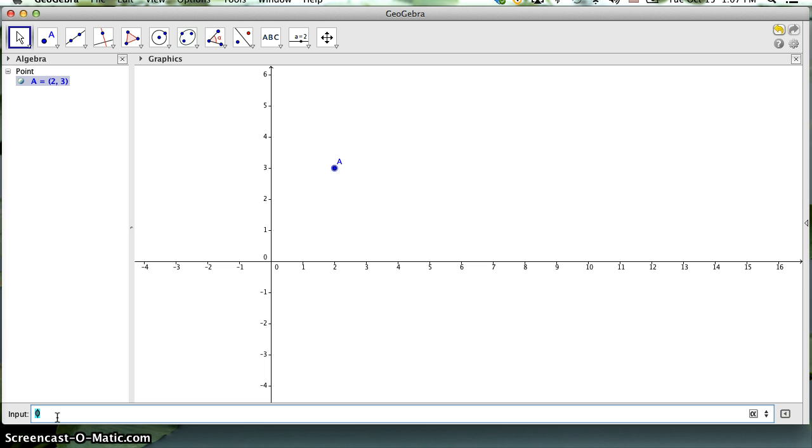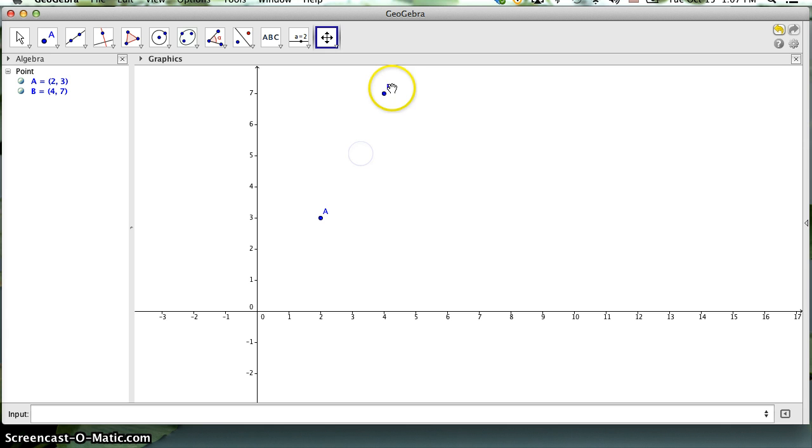If I want to put in the point 4, 7, 4, 7. Now you see that 4, 7 isn't showing up here. That's because it's outside of the viewing window. However, if I just drag the screen around, it'll come into view there.